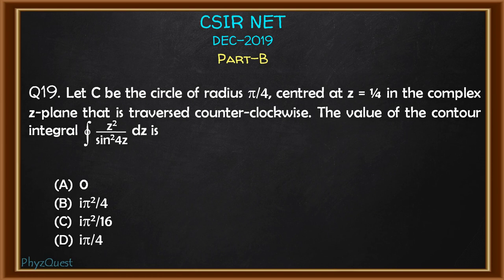Hello, welcome to FizzQuest. This is the solution video for CSIR NET December 2019, Part B, question number 19. The question is: let C be the circle of radius π/4 centered at z = 1/4 in the complex z-plane, traversed counterclockwise. We need to calculate the value of the contour integral z²/sin²(4z) dz. Four options are given and we need to choose the correct option.